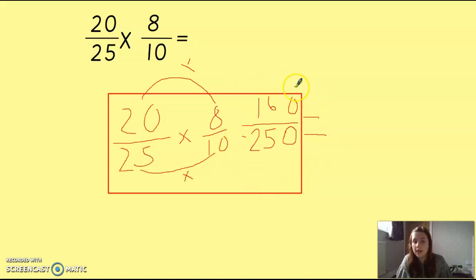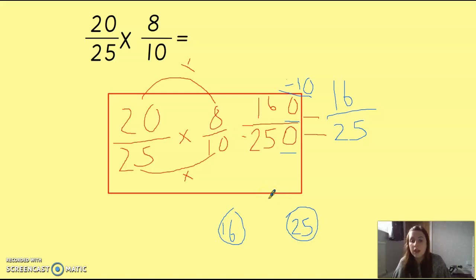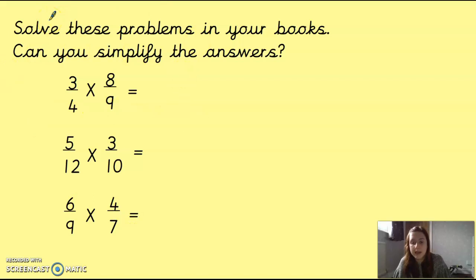Now, if you were working with fractions, 160 over 250 is a very, very big fraction. So in some cases, you will be asked, or you'll need to, simplify the answer. Now, I'm not expecting you in this one to work out your 160 and 250 times tables. Something that's really easy that I can see, for example, on this one, is that we've got our zero on the end. So I know that something I could do is divide them both by 10 to make them smaller. So that would give us 16 twenty-fifths to simplify it.